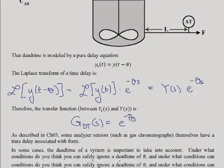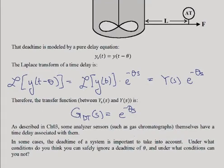Now, as we described in earlier topics, some analyzer sensors, things like gas chromatographs, themselves have a time delay associated with them, and so just theta would change in this relationship. So you have time delay, or dead time, because of the flow through there, and dead time because of the analyzer sensor itself.